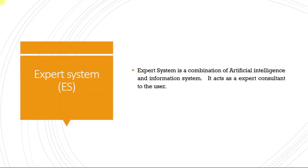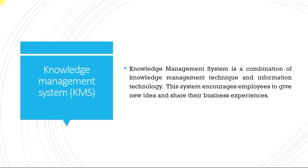The first of the other systems is expert system, or ES. Expert system is a combination of artificial intelligence and information system, and it acts as an expert consultant to the user. Next is KMS, or knowledge management system — a combination of knowledge management technique and information technology. This system encourages employees to give new ideas and share their business experiences.